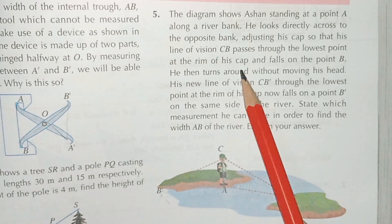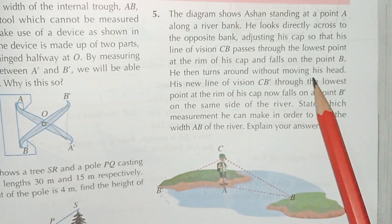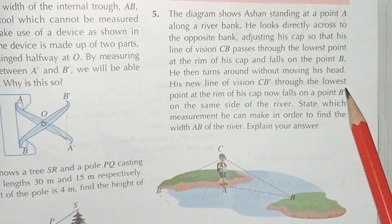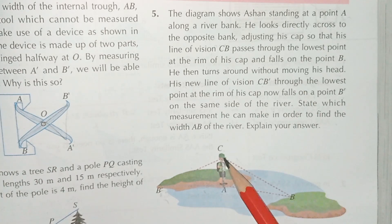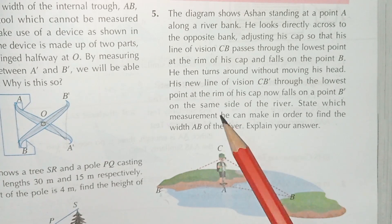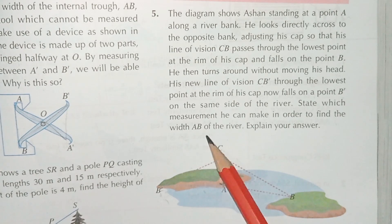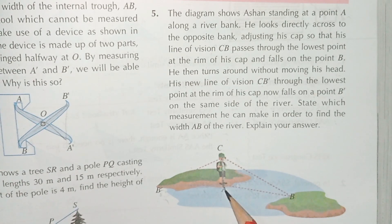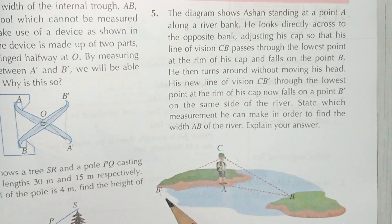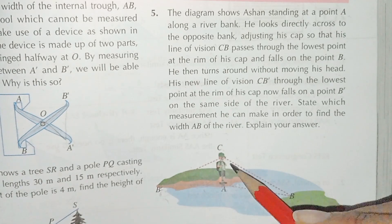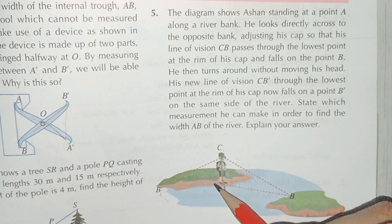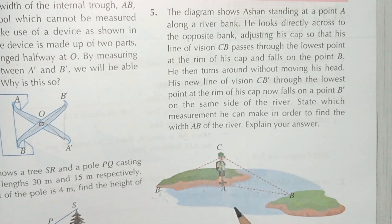It is given that CB is equal to CB'. To find the width AB, he should measure AB'. We can see there are two triangles: triangle ACB' and triangle ACB. When both triangles are congruent, the lengths of both sides are equal, meaning AB' is equal to AB.